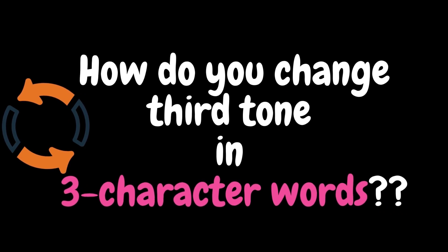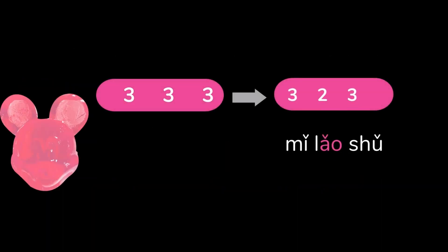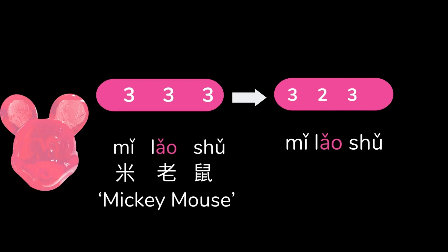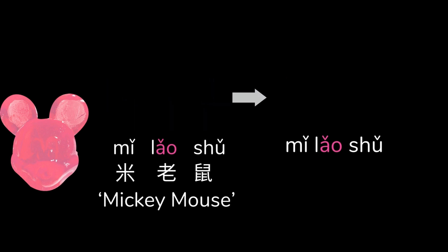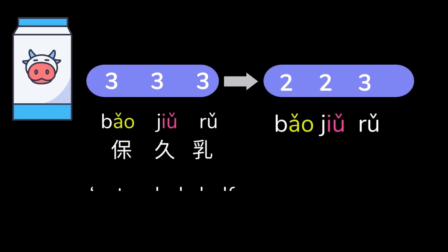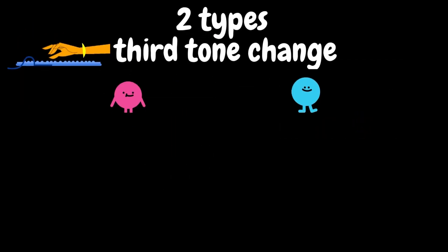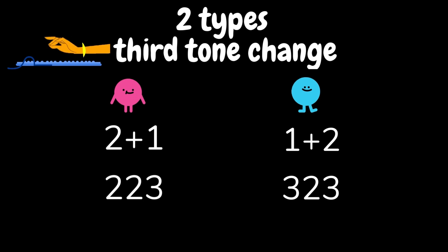However, have you ever seen a sequence with more third-tone characters? How should they be pronounced? I'll quickly pronounce the following three-character words: 米老鼠, 李老板, 饱久乳, 水彩笔. You could feel lost — however, it can be simply explained by dividing them into two categories: two-plus-one and one-plus-two.